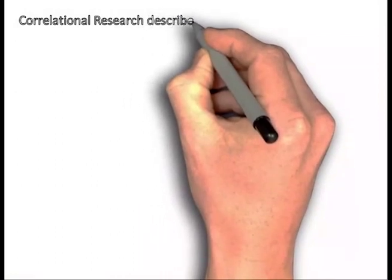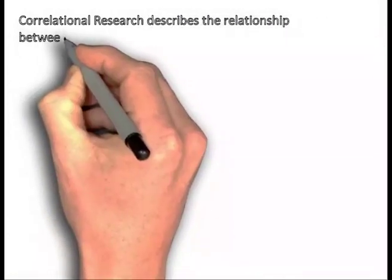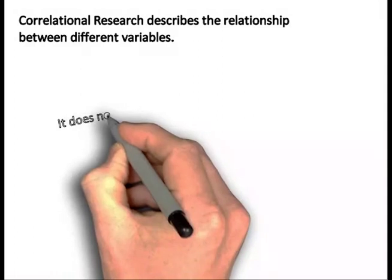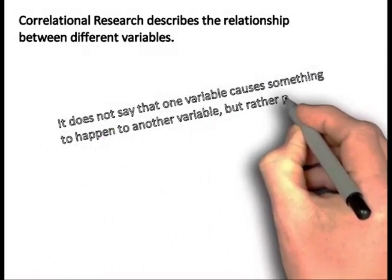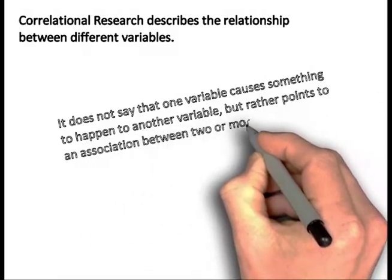Correlational research describes the relationship between different variables. It does not say that one variable causes something to happen to another variable, but rather points to an association between two or more variables.